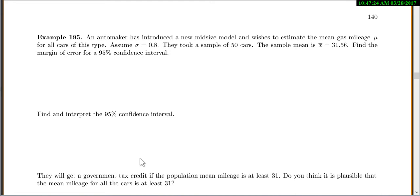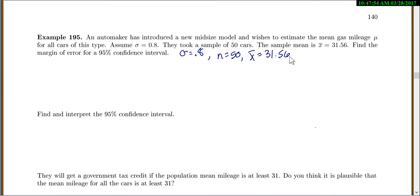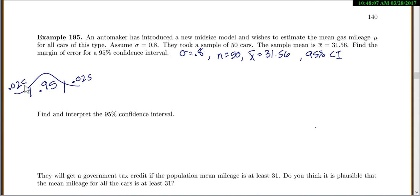An automaker introduced a new midsize model and wants to estimate the mean gas mileage mu. Assume the population standard deviation is 0.8. They took a sample of 50 cars and got a sample mean of 31.56. We want to find the margin of error for a 95% confidence interval. Given: sigma equals 0.8, n equals 50, x-bar equals 31.56, and we want 95% confidence. Drawing a picture: 0.95 in the middle, 0.025 on each side.